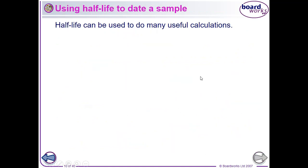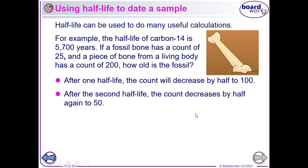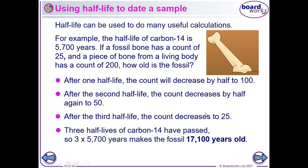There are lots of cases where carbon-14 dating is extremely useful — for Roman wrecks, for example. A piece of bone from a living body has a count of 25. In living tissue the count is about 200. So: 200 down to 100 is one half-life; 100 down to 50 is two half-lives; 50 down to 25 is three half-lives. That's three times 5,700 years — about 17,100 years old.